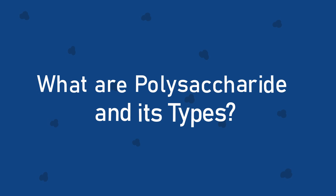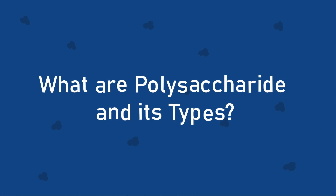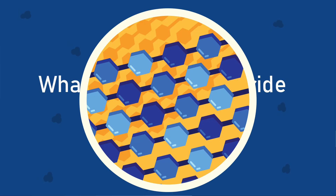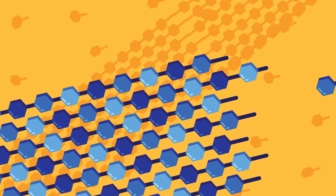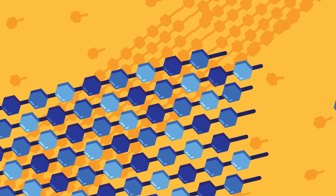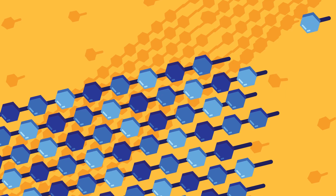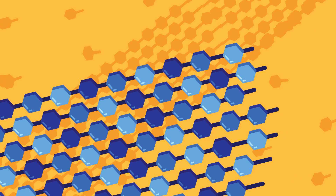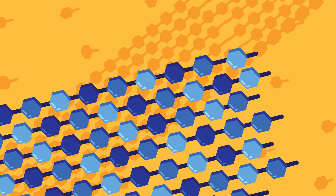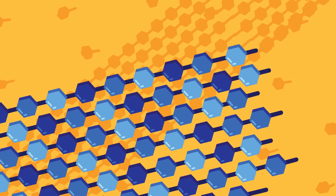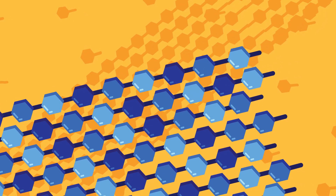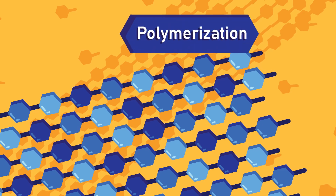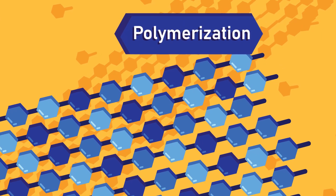What are polysaccharides and their types? A polysaccharide is formed when many monosaccharide molecules join together. The process of condensing many similar molecules to form a large molecule is identified as polymerization.